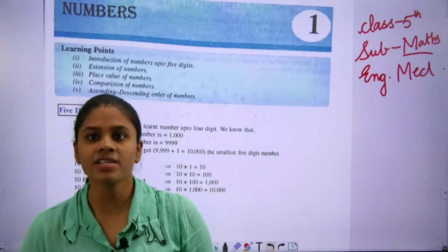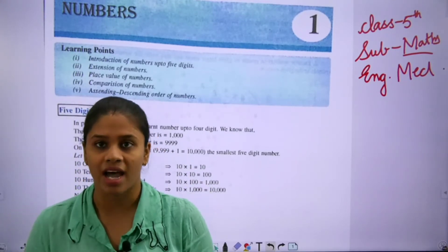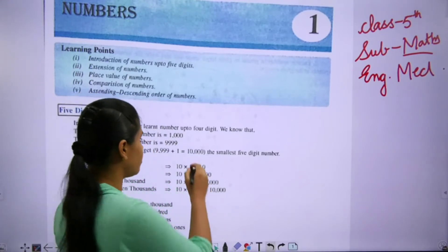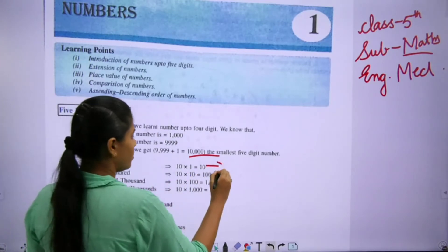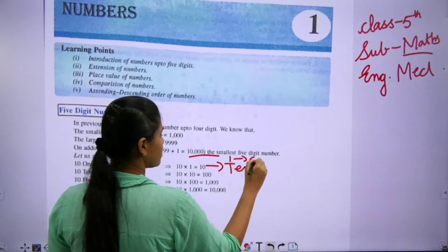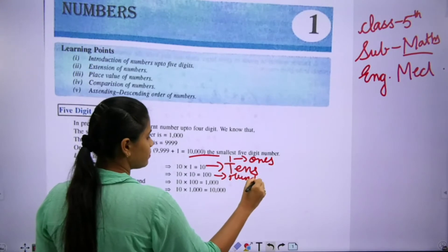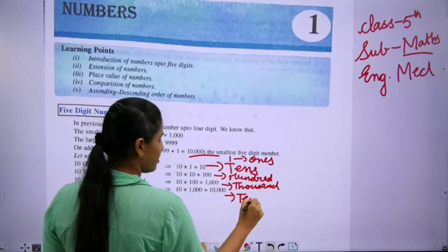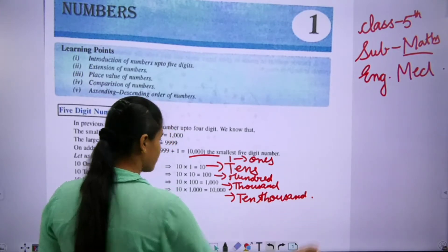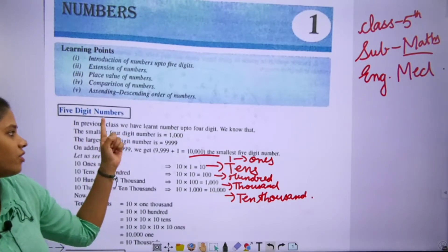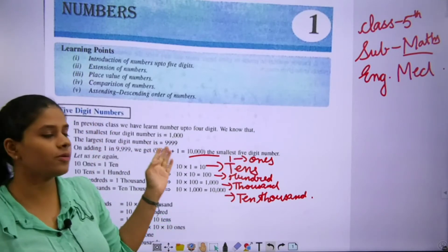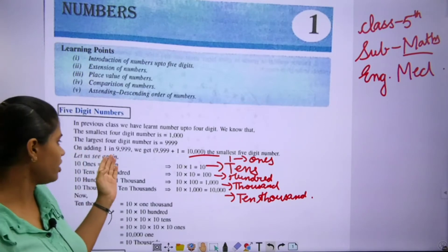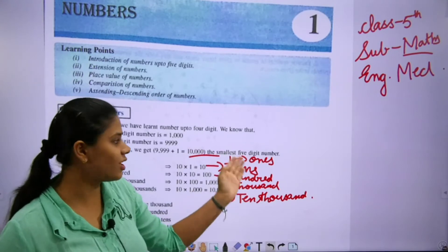The smallest 4-digit number is 1000 and the largest 4-digit number is 9999. If we add one to 9999, then it will be 10,000. In our previous class, we learned numbers up to 4 digits. We know that the smallest 4-digit number is 1000 and the largest is 9999. On adding 1 to 9999, we get 10,000 — the smallest 5-digit number.